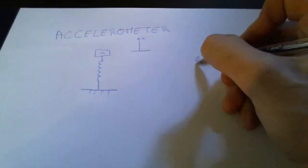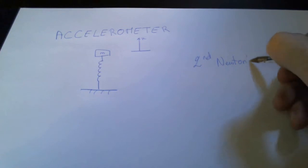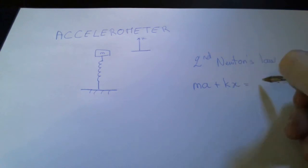We can describe the movement of the mass with an equation, the second law of Newton. The mass times the acceleration plus the stiffness constant multiplied by the displacement is equal to zero: ma + kx = 0.